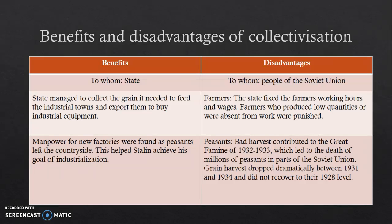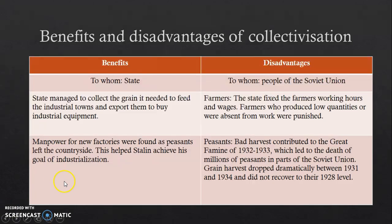What are the benefits and disadvantages of collectivisation? The benefits mainly benefited the state. The state managed to collect the grain it needed to feed industrial plants and export them to buy industrial equipment. They could decide where the crops went and earn profit from exports. It also benefited the state because manpower for new factories was found as peasants left the countryside, helping Stalin achieve his goal of industrialisation.